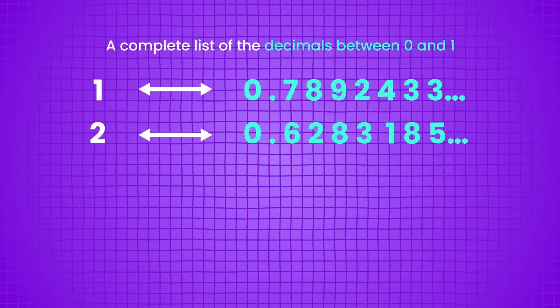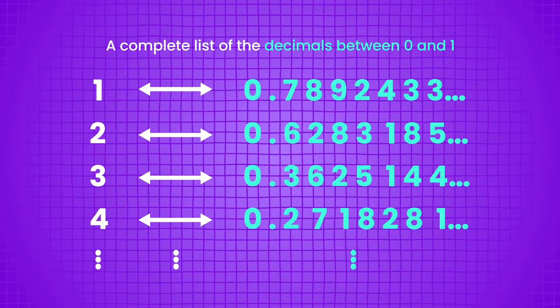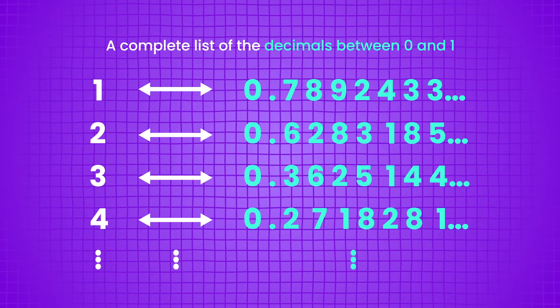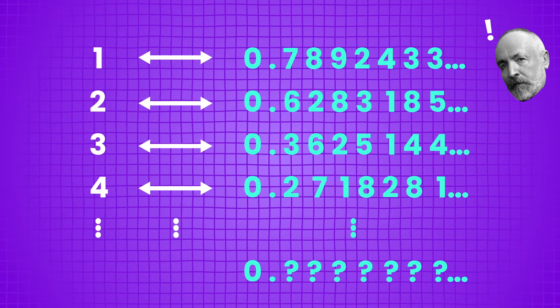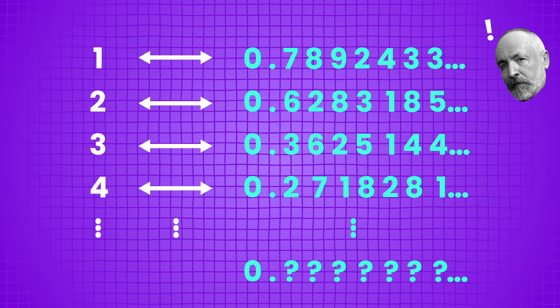Imagine, for the sake of argument, that you could pair the naturals with every single decimal between zero and one, so that you have an infinite but complete list of all the decimals from zero to one. Exactly how doesn't really matter. Yet, Cantor noticed that you could always create a new decimal guaranteed not to be on your complete list.